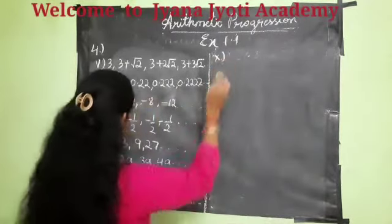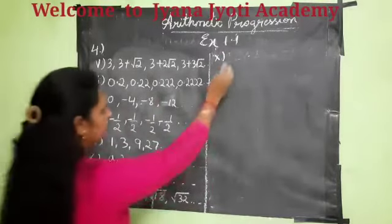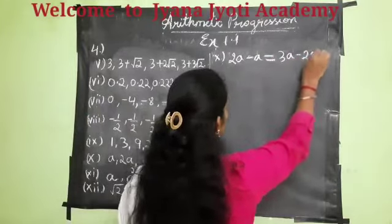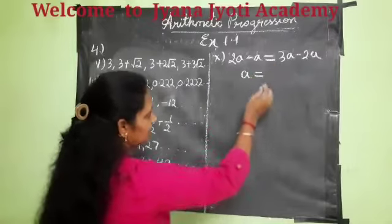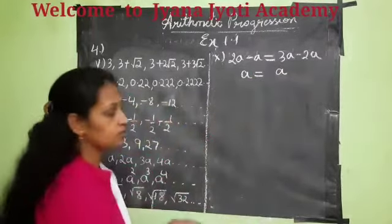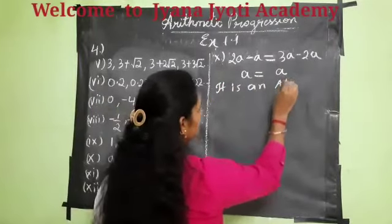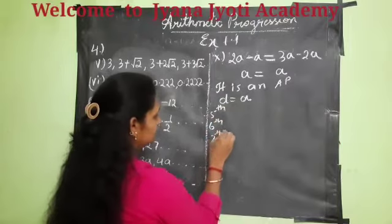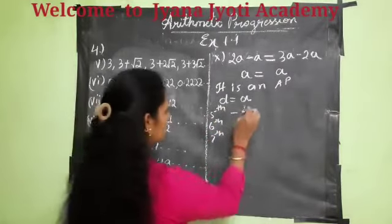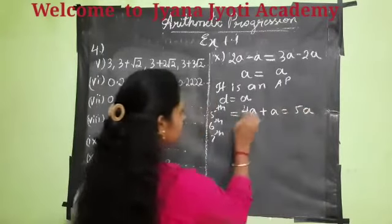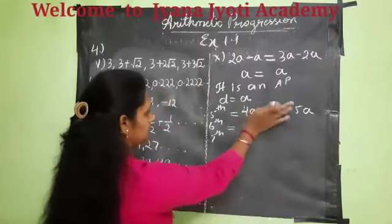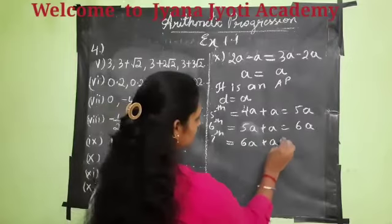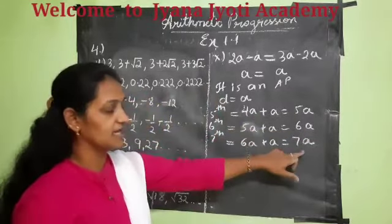Tenth problem: here 2A minus A should be equal to 3A minus 2A. So 2A minus A is A, and 3A minus 2A is also A. Hence both are equal, therefore it is an AP with common difference D equal to A. The fourth term is 4A, so 4A plus A gives the fifth term 5A. Sixth term: 5A plus A equals 6A. Seventh term: 6A plus A equals 7A. So the next three terms are 5A, 6A, and 7A.